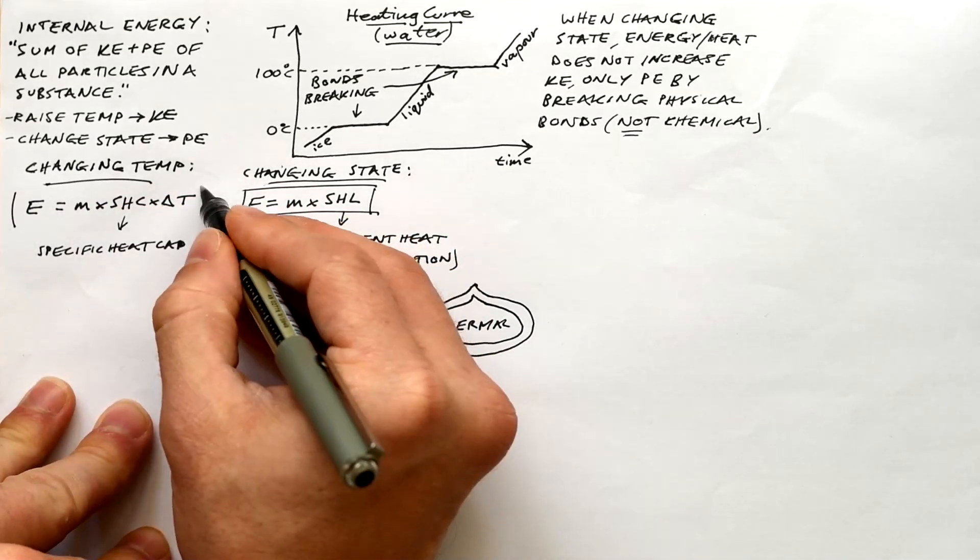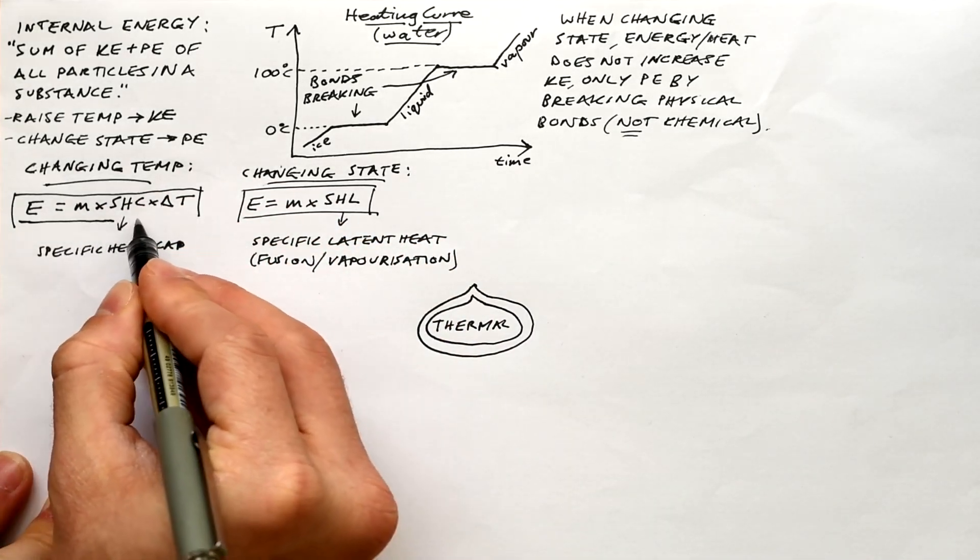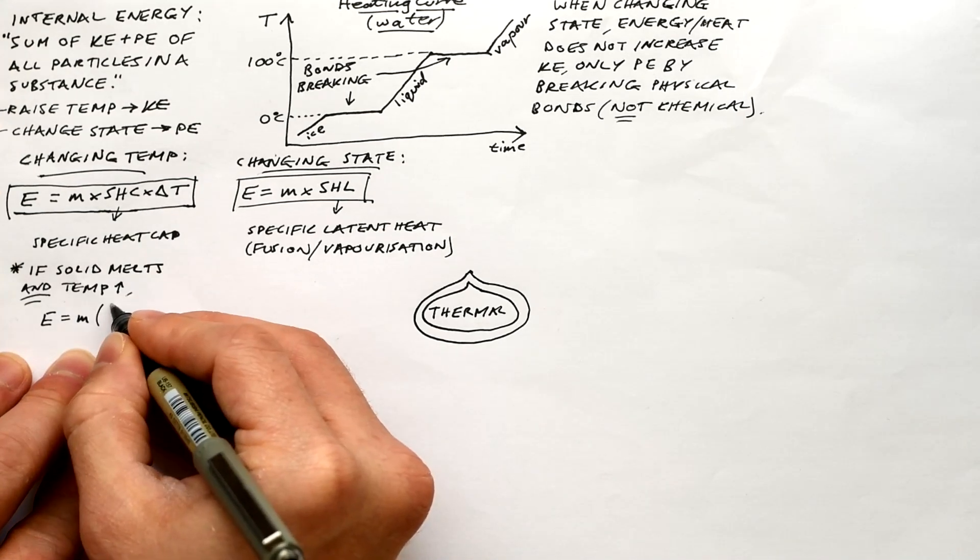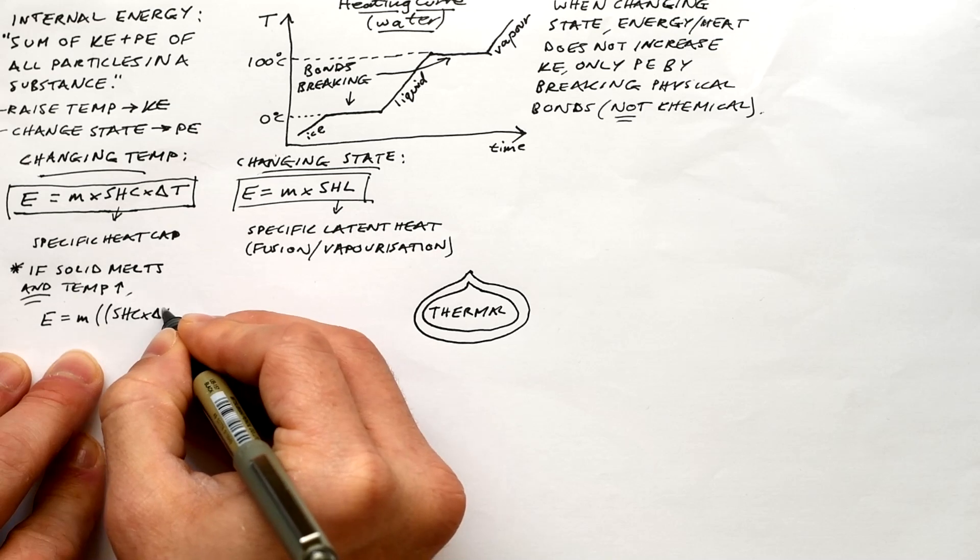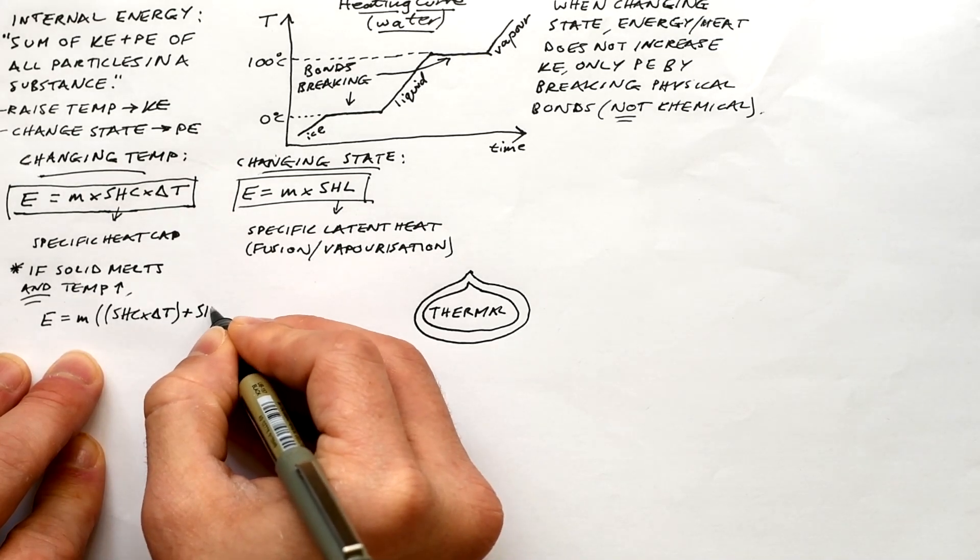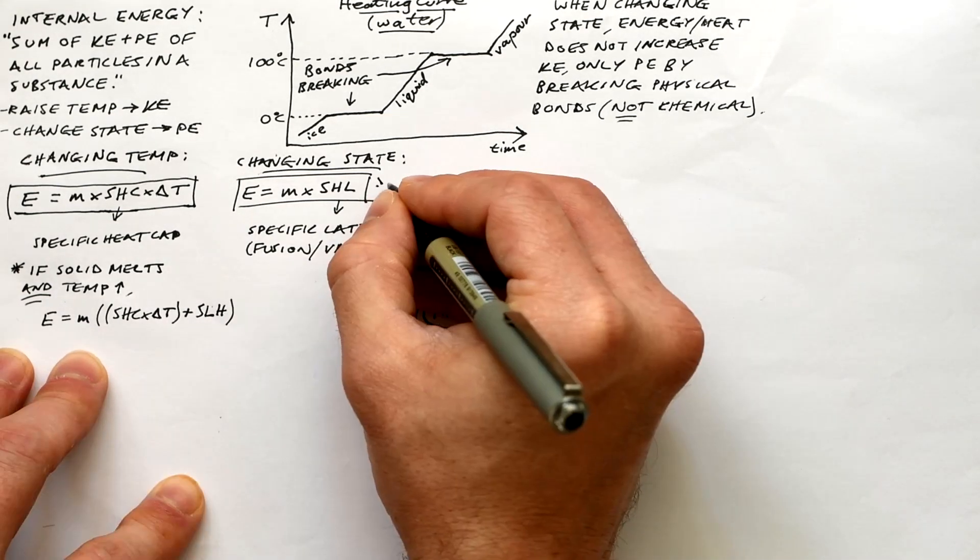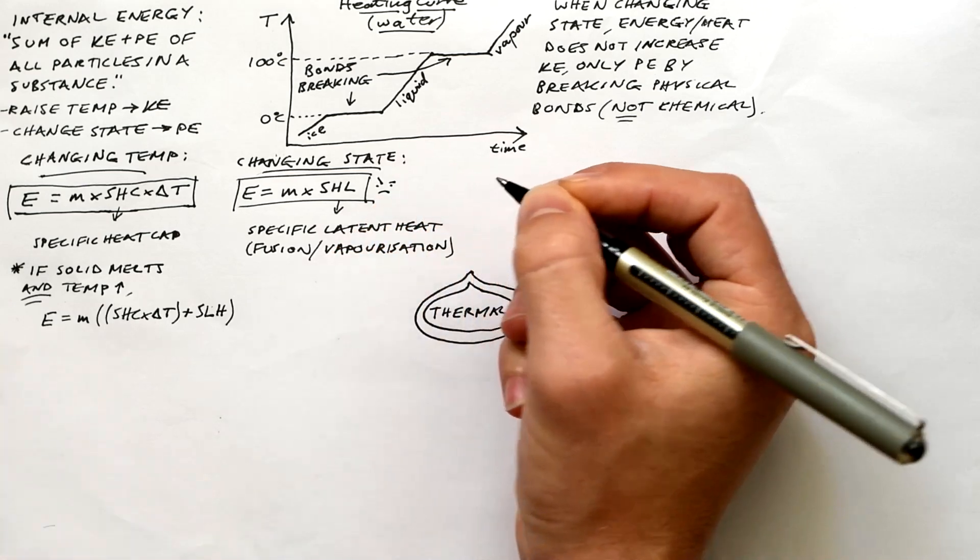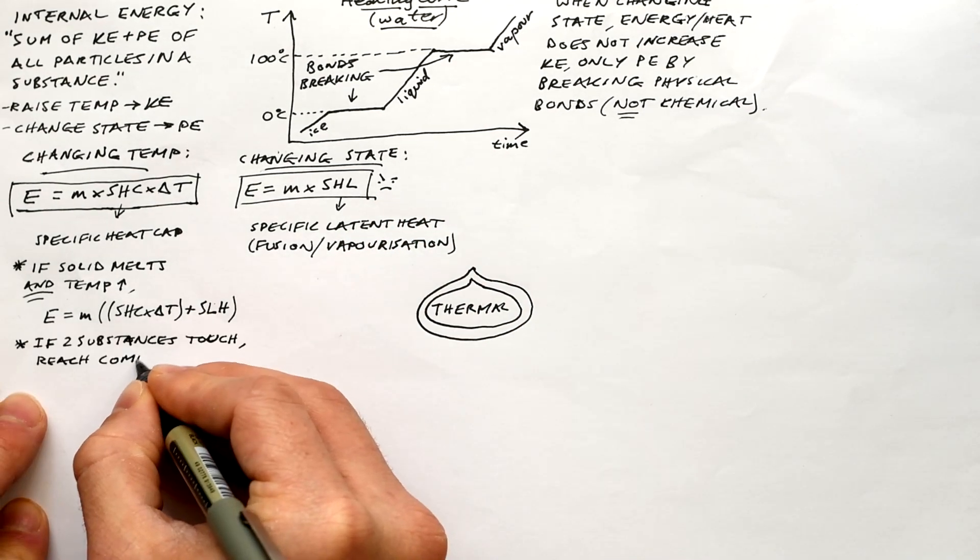So the idea and the equations are fairly easy, but they've asked some pretty tricky questions even at GCSE on this lately. If you have a solid that is melting and the temperature goes up, then we know that the energy is equal to M times SHC times delta T and M times SLH because we need both of those energies to raise the temperature and change the state. So therefore we can factorize it. We can say energy is equal to mass times SHC times delta T plus SLH.